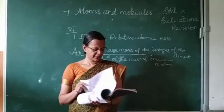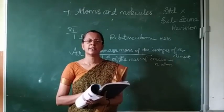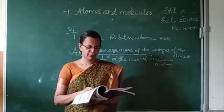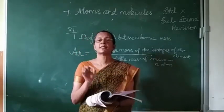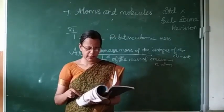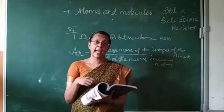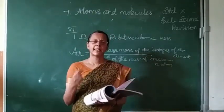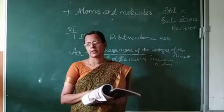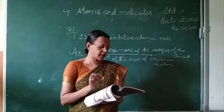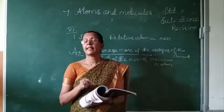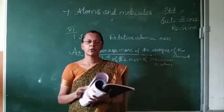Third question: Define atomicity. The answer is on page number 94. Atomicity is the number of atoms present in a molecule. Based on atomicity, atoms are classified as monoatomic, diatomic, triatomic, and tetraatomic.